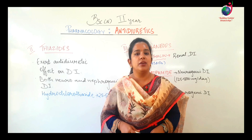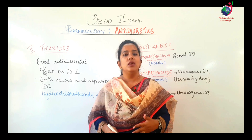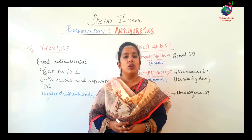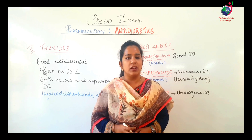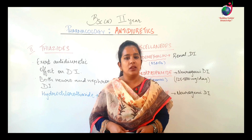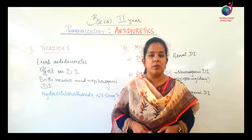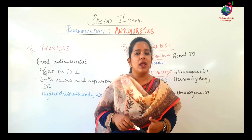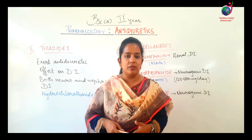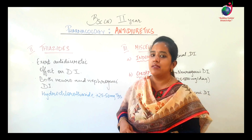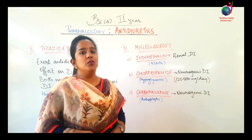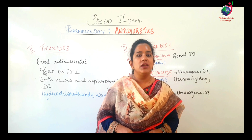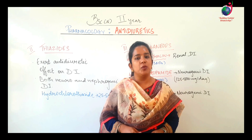To summarize, today we studied antidiuretic drugs — drugs given to reduce urinary flow — under three classifications: first, vasopressin or antidiuretic hormones including natural and synthetic derivatives; second, thiazides; and third, miscellaneous drugs including indomethacin, chlorpropamide, and carbamazepine.